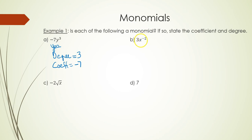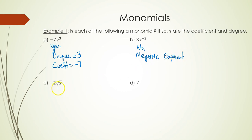In part b, the power on the variable is negative two. Since there is a negative exponent on the variable, the answer is no. In part c, I have negative two times the square root of x. There's a radical surrounding x, so this is also no — because the variable is under a radical.